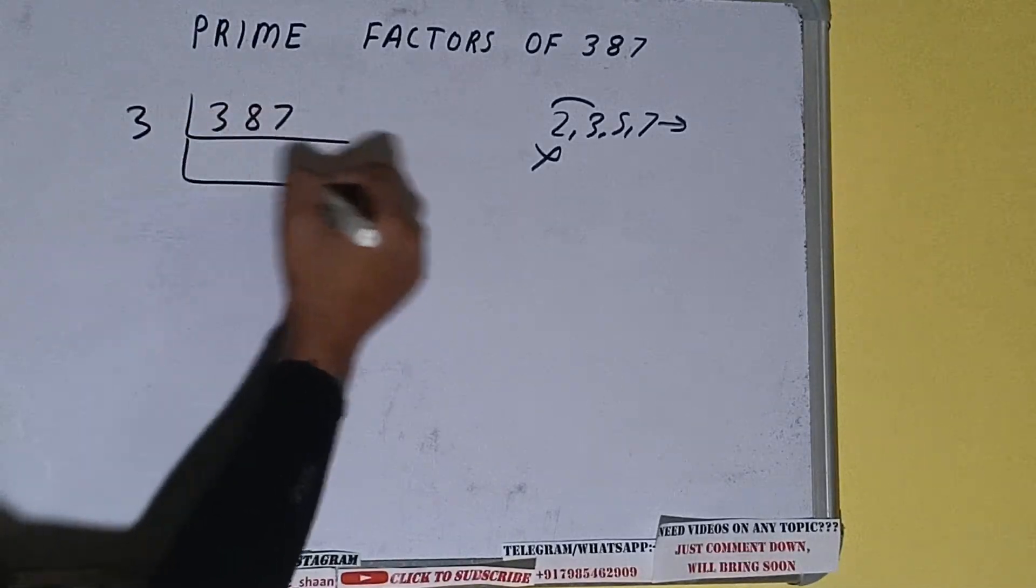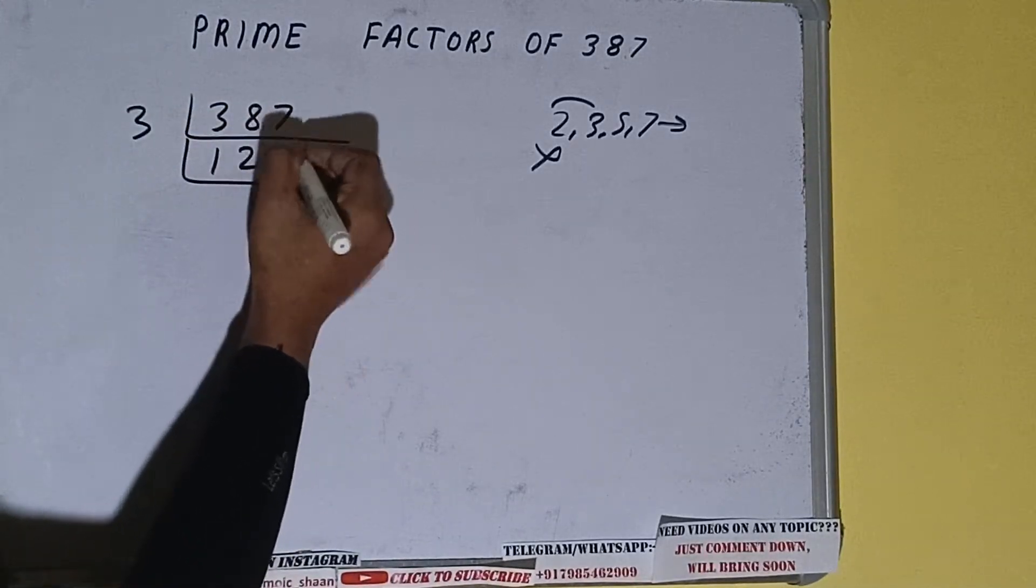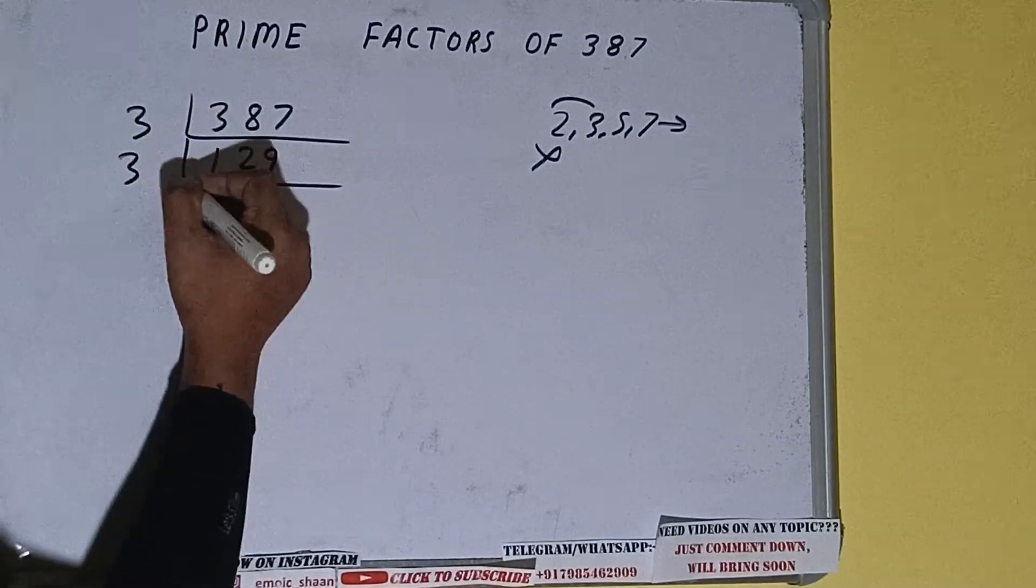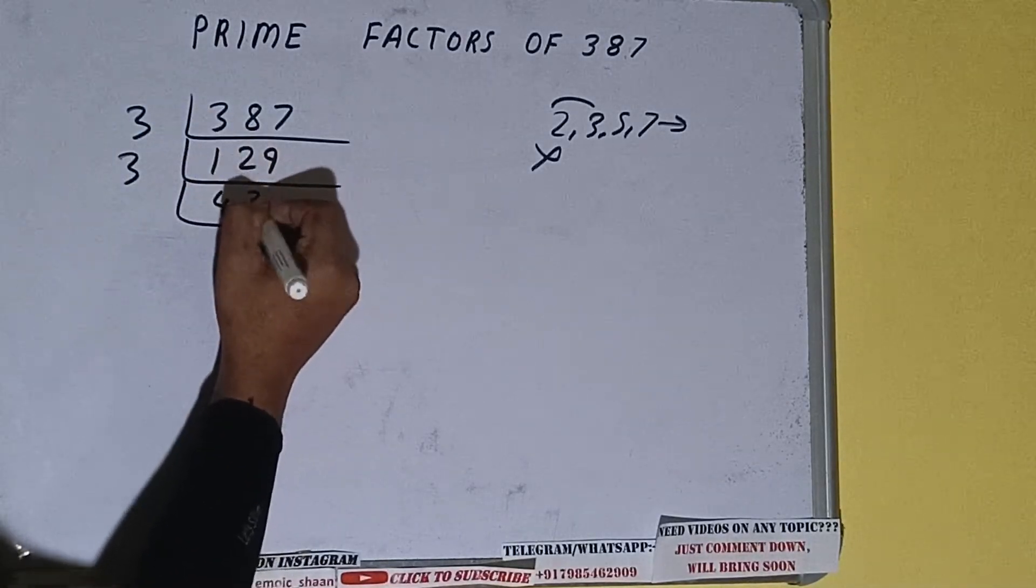3 ones are 3, 3 twos are 6, 3 nines are 27. We'll be having 129. Now, is this 129 further divisible by 3? We need to check: 3 fours are 12, 3 threes are 9. It is divisible by 3, so let's divide. 3 fours are 12, 3 threes are 9. We'll be having 43.